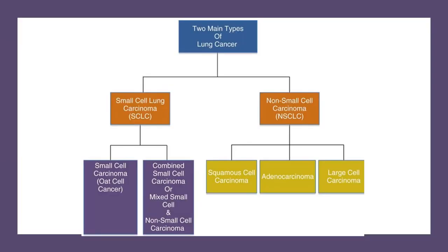There's a flowchart directly from the book showing the two main cell types. Small cell branches to oat cell cancer, or combined where they have a couple different types of small cells, or small cell on top of non-small cell — for example, adenocarcinoma and small cell carcinoma occurring at the same time. Non-small cell branches to squamous cell, adenocarcinoma, or large cell carcinoma. Risk factors can cross over so you can have both small cell and non-small cell.